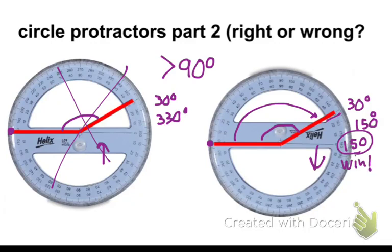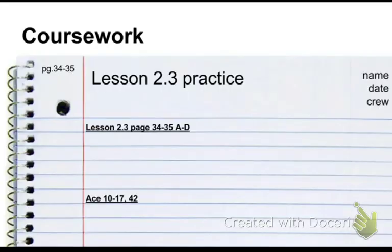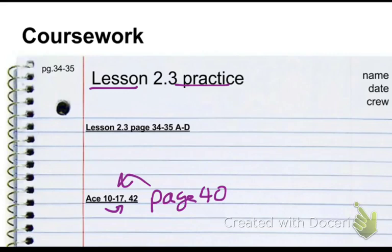Okay, be especially careful with circle protractors from now on. All right, ladies and gentlemen, your coursework for today, or for class, is going to be lesson 2.3, page 34 through 35, A through D. You will need a protractor to solve these problems. You will then need to do the ACE problems starting on page 40, from 10 to 17, and then skip ahead and do problem 42. Remember to keep your answers in the outline format. See you in class tomorrow.